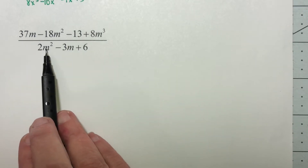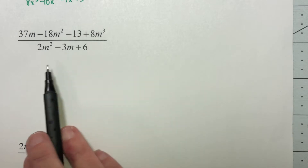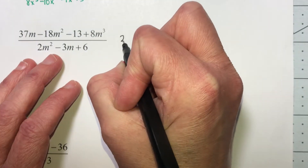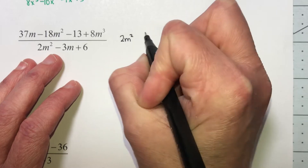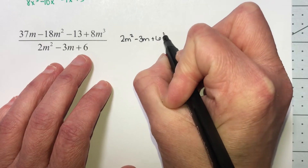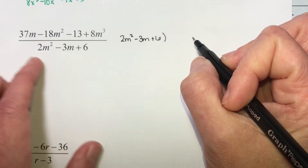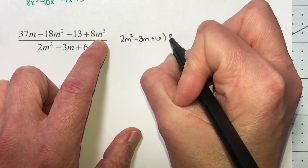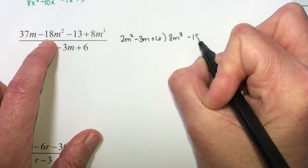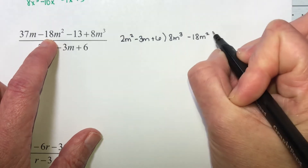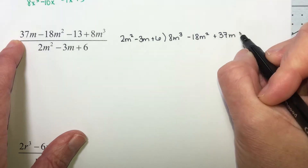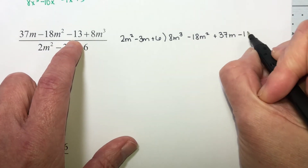In the bottom: second power, first power, constant — they are there and they are in order. So let's set this up: 2m squared minus 3m plus 6 divided into 8m cubed minus 18m squared plus 37m minus 13.